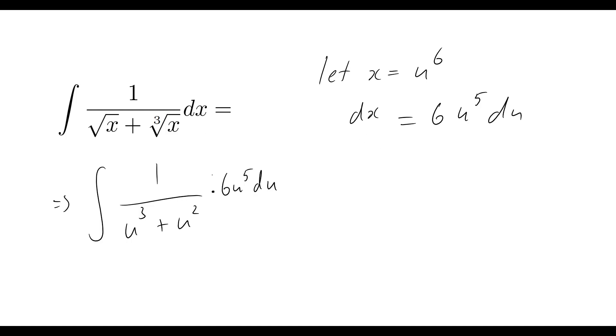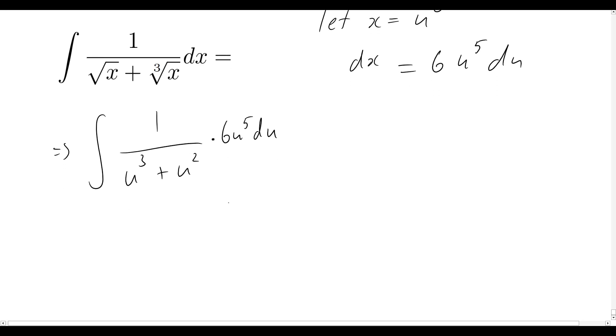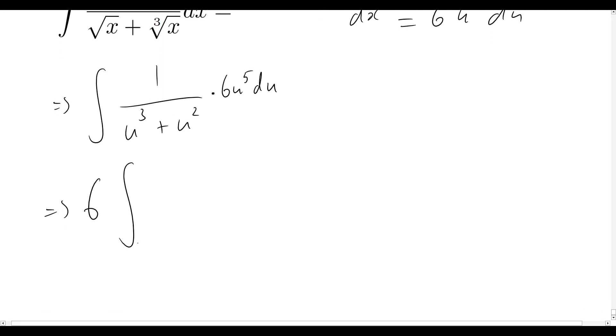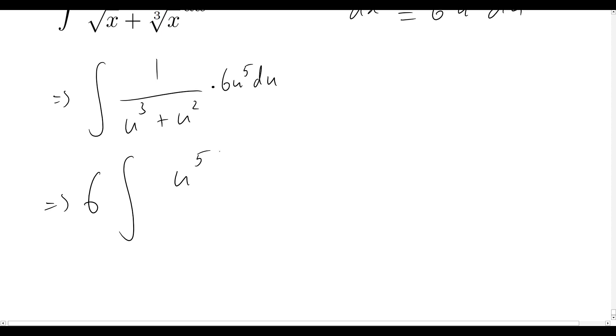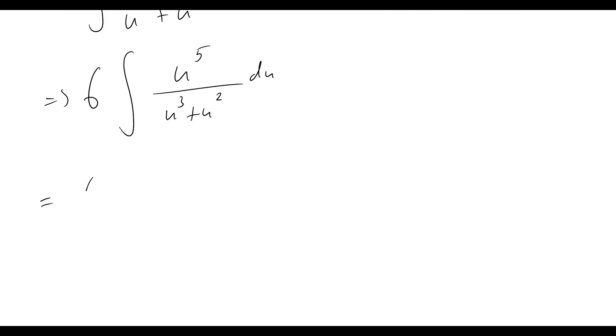So now that we've got our problem written out like this, a couple things we can do here. Firstly we can take that factor of 6 out the front and so we can rewrite the problem as 6 times the integral of u to the 5 over u cubed plus u squared du. And we can also eliminate a factor of u squared from every single term here. It becomes 6 times the integral of u cubed over u plus 1 du.